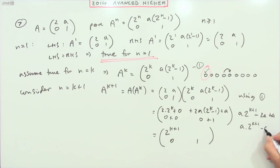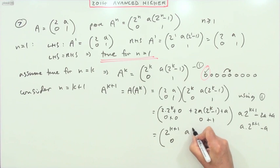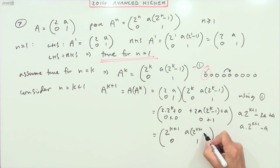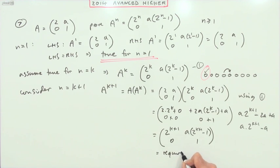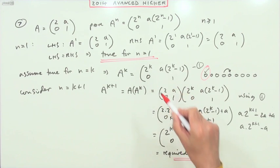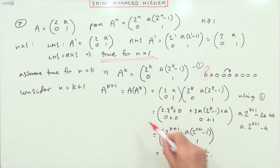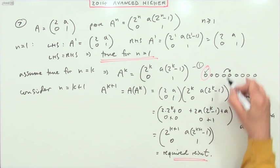plus 1 minus an a. Taking the a out, I've got a times 2 to the k plus 1 minus 1. And I'll finish that by saying that is the required result. That's the result I was looking for. I was wanting to get the same expression with k plus 1s in it if I followed through the operation to the next step, which means I've got the link.